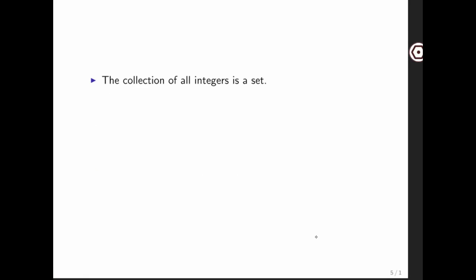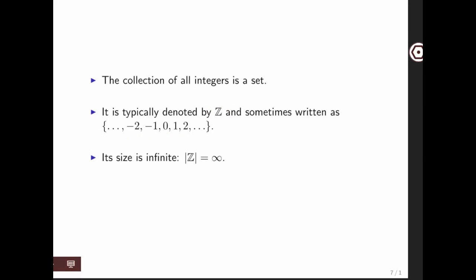The collection of all integers is a set. We often denote it by Z, and we sometimes will denote all of the objects in that set by enumerating them with this dot dot dot notation. And notice that there are an infinite number of integers, so the size of this set is infinite.